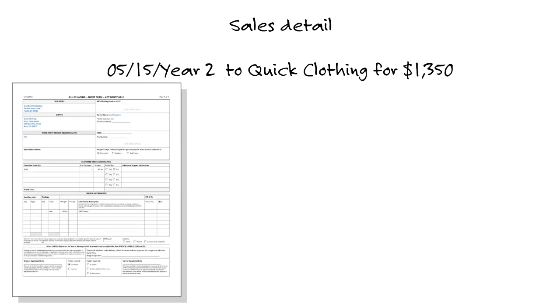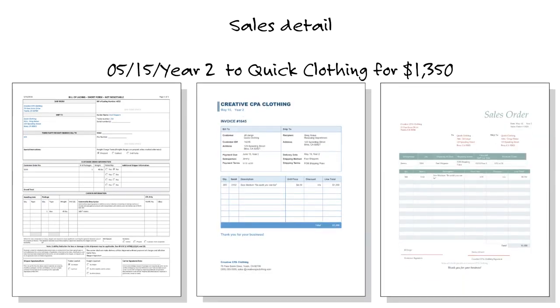Now, let's say from the detail, the auditor selected this sale transaction that we just discussed. May 15, year 2, to Quick Clothing for the amount of $1,350. We'd expect the auditor to ask Creative CPA to pull the evidence, which would include the bill of lading, invoice, and sales order you've just seen.